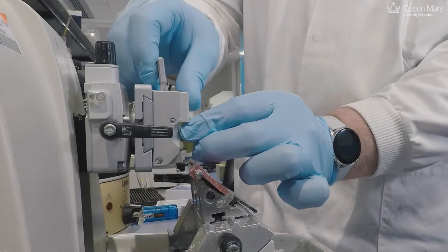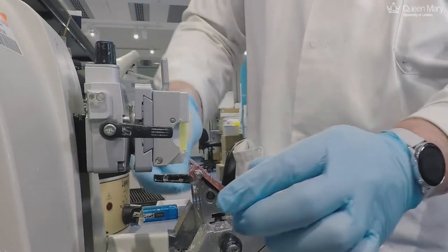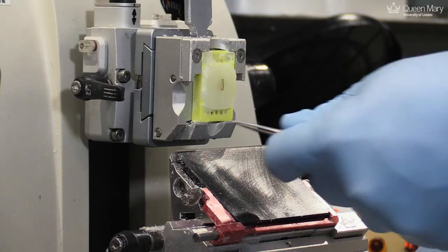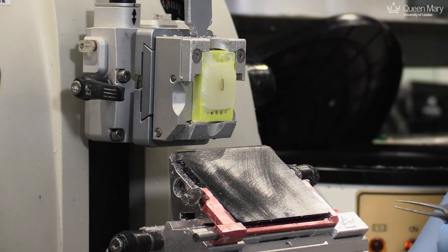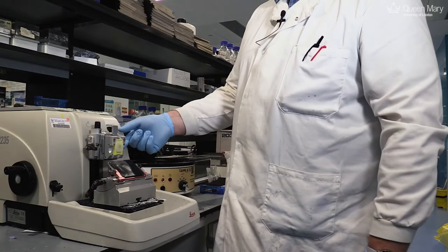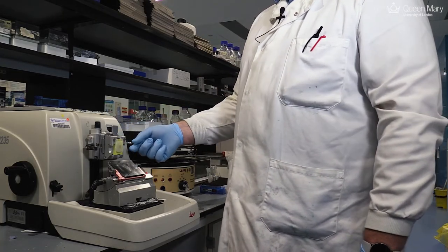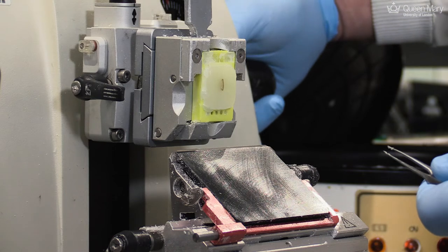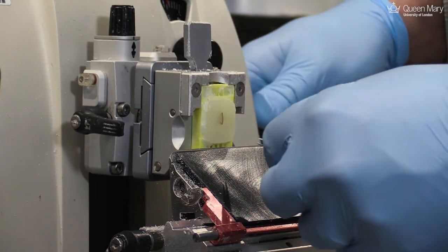We'll mount the block in the microtome, which holds it in place, and we have an extremely sharp microtome blade that we use to cut the sections. We can set how thick we want the sections—I've set this to be 5 microns—and then we can cut very thin slices of the wax block, which will give me very thin slices of the skin.